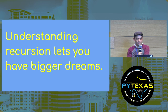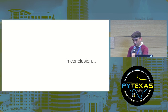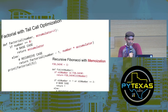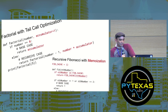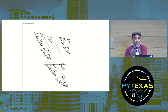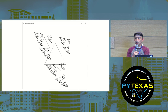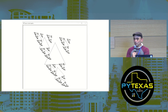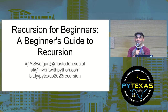Understanding recursion lets you have bigger dreams. In conclusion: recursion is a hack that produces an over-engineered mess just so insufferable programmers can show off how smart they are — and recursion is an amazing concept that allows you to see new things in the field of programming. It's something you don't need to be a genius to understand. It is subtle, it is complex, it is beautiful, and it's worth your time and effort to understand. Thank you.